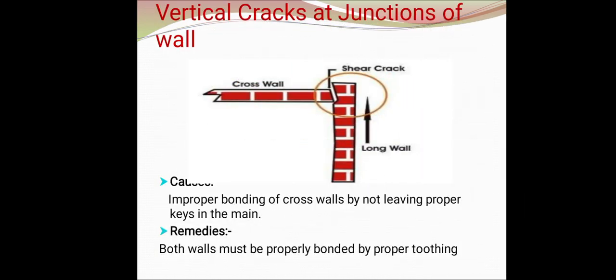Vertical cracks at the junction of walls are caused by improper bonding of cross walls by not leaving proper keys in the main wall. The remedy is that both walls must be properly bonded by proper toothing.